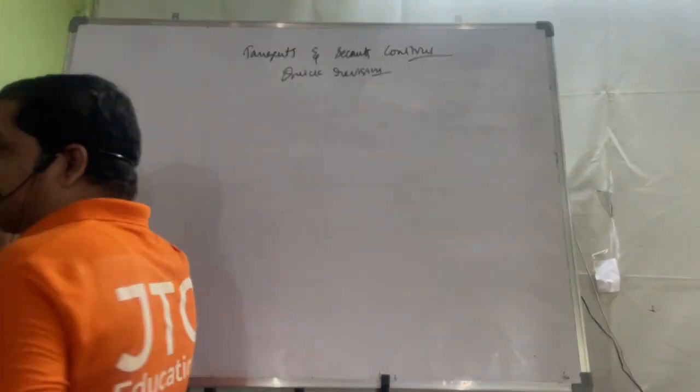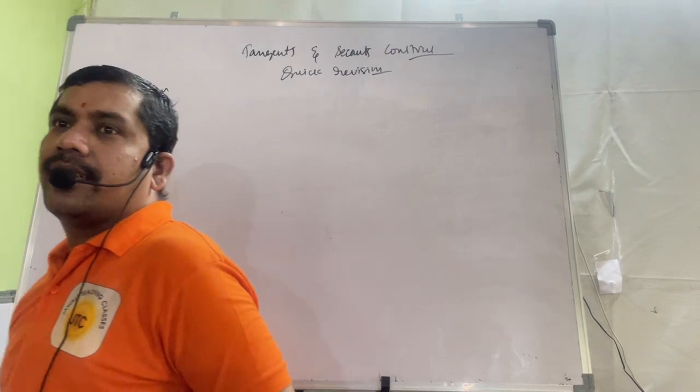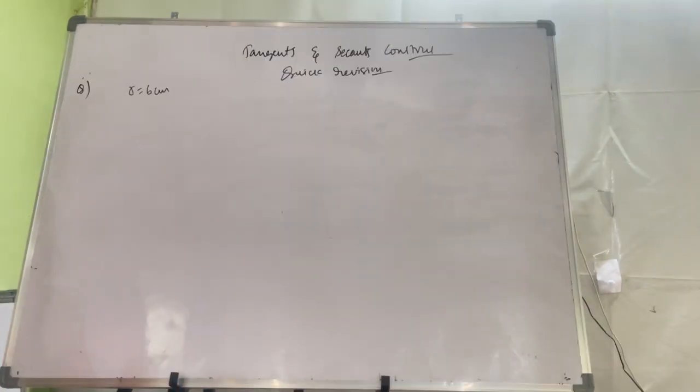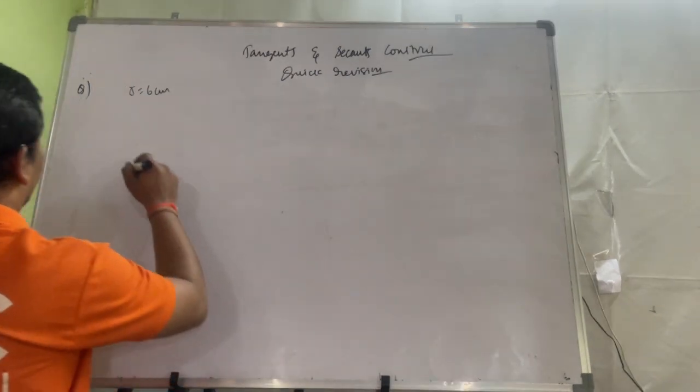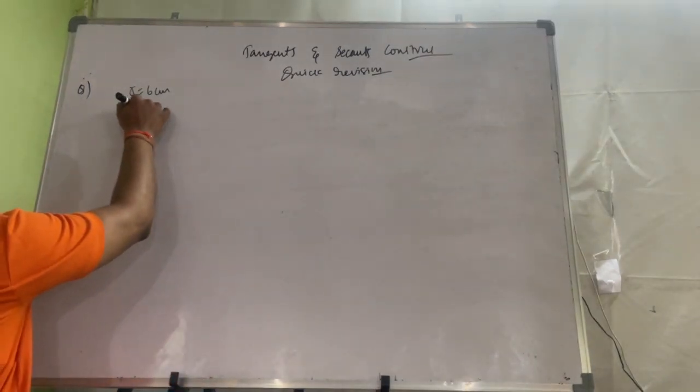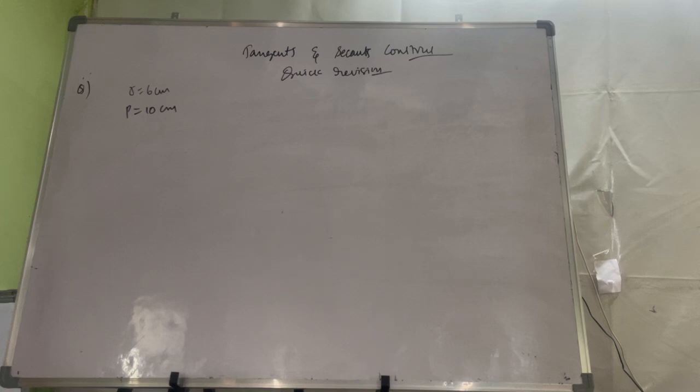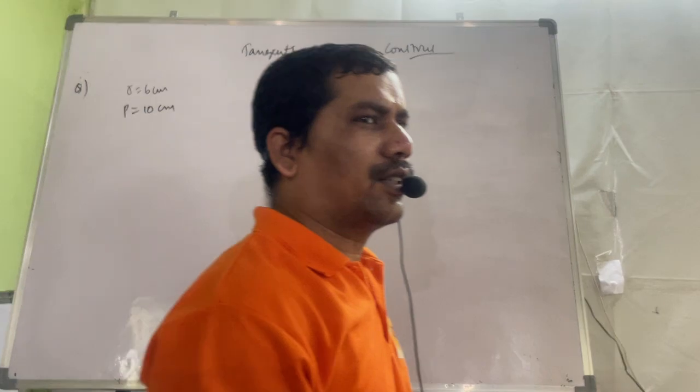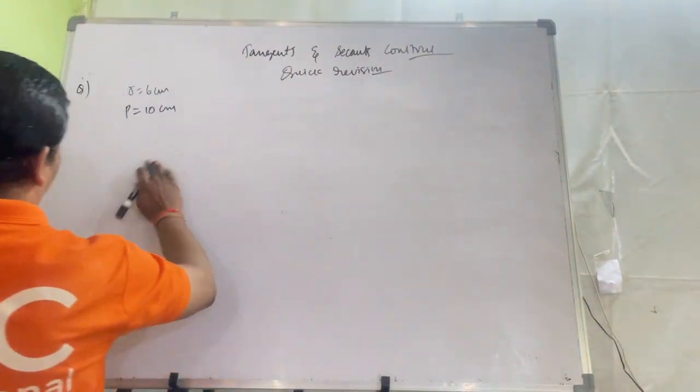Suppose what they will give: construct a circle with radius 6 cm, then from a point P, 10 cm away from the center. From a point P, 10 cm away from center, you draw the pair of tangents. This type of question will be given.